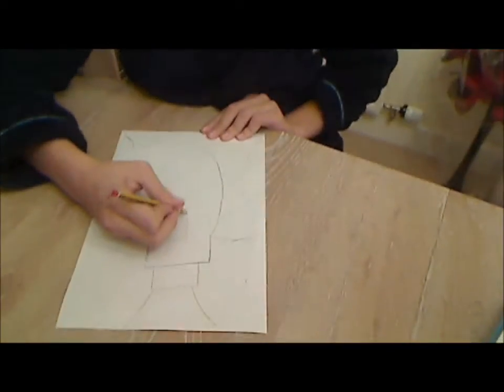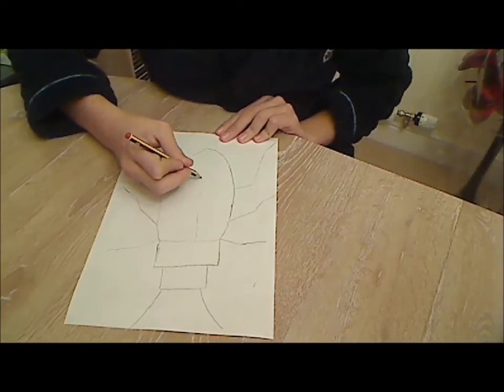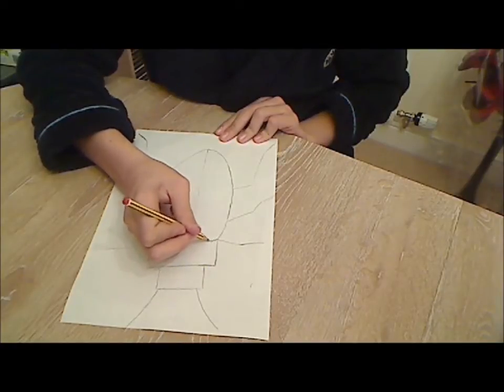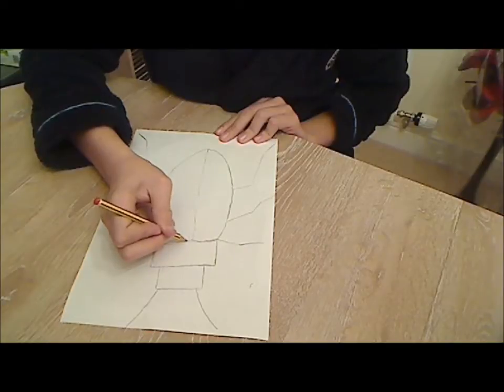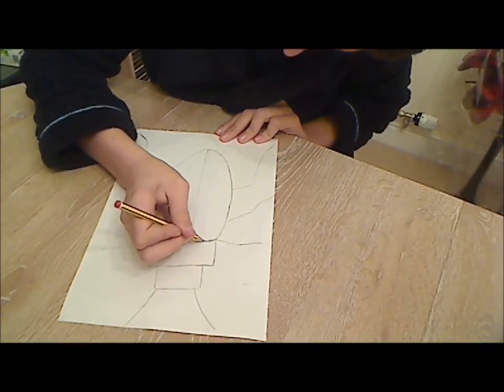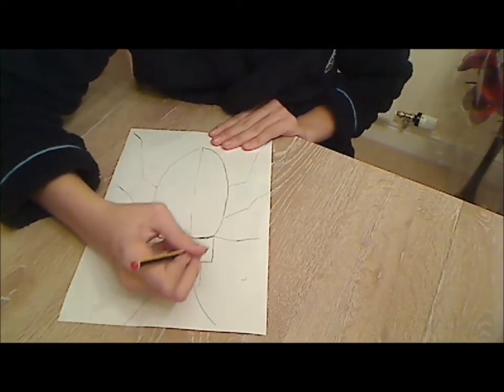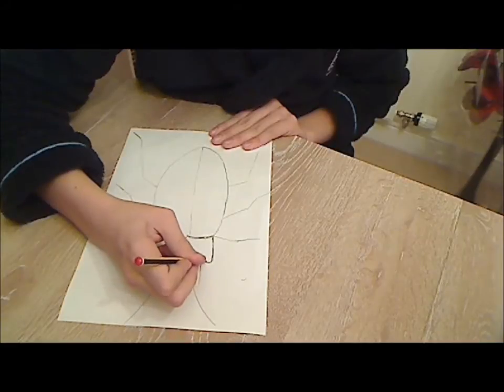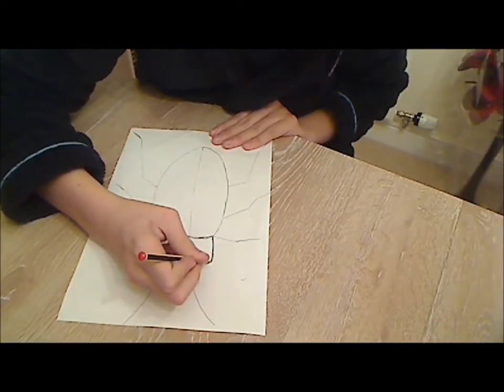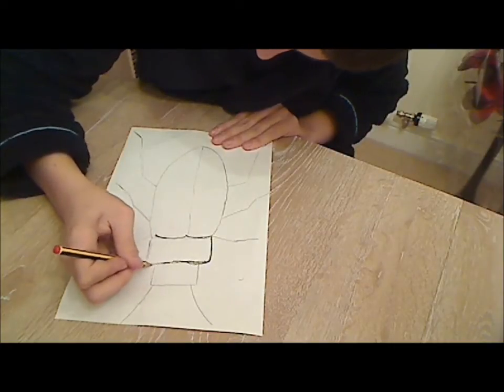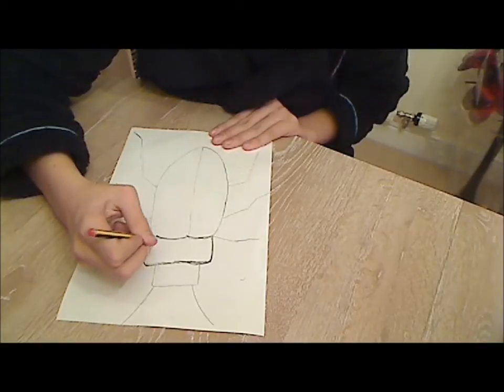Step 5. Now you want to start adding a bit more detail onto your beetle. Start by drawing a line down the back of the beetle. Instead of straight lines, you want the beetle back to be just slightly curved. Do the same for the shoulders and do the same for the head.